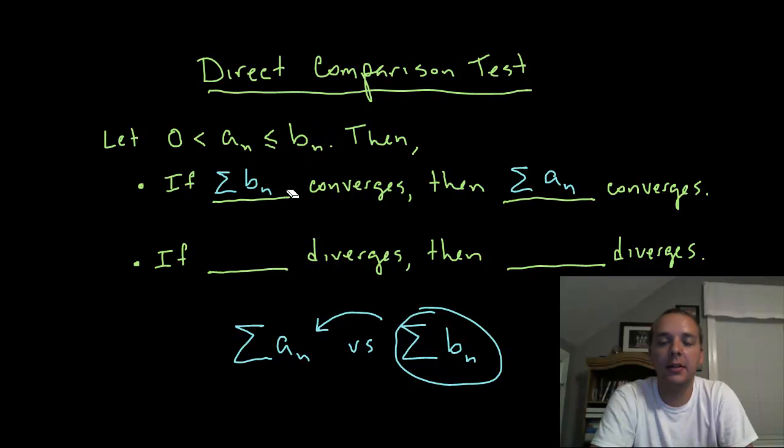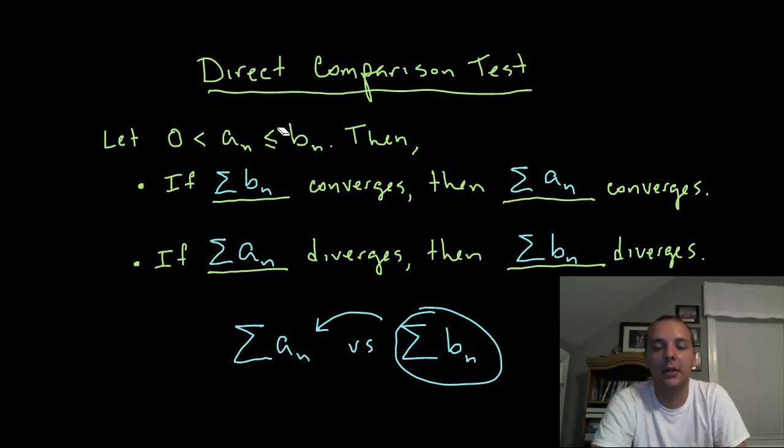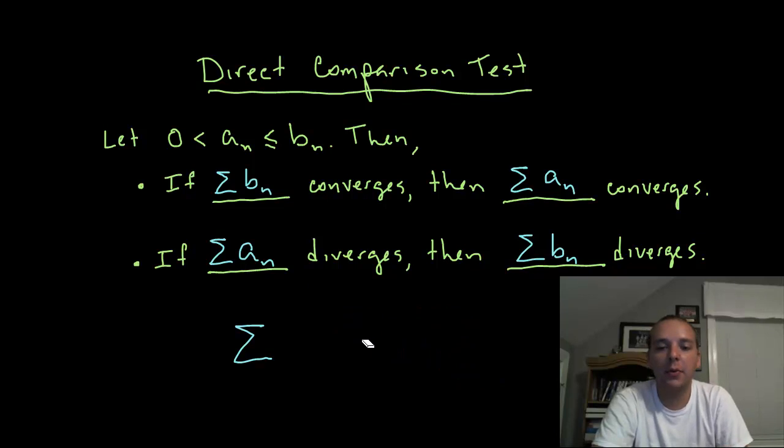But we can say this: if blank diverges then blank diverges. So what would the implication be there? Well, if you add up the terms of the smaller sequence and it blows up to infinity or diverges, then surely if you add up the larger terms it will diverge as well. You just have to be real careful with your inequalities when you're doing these direct comparison problems.